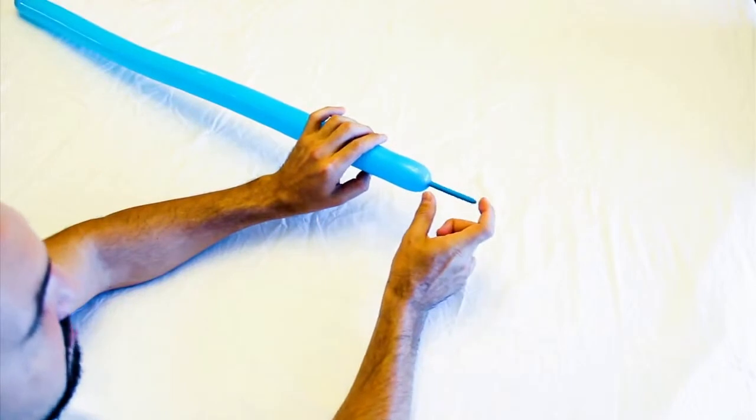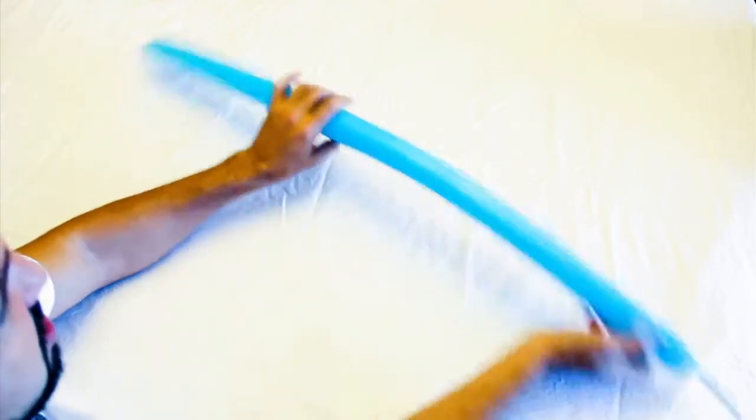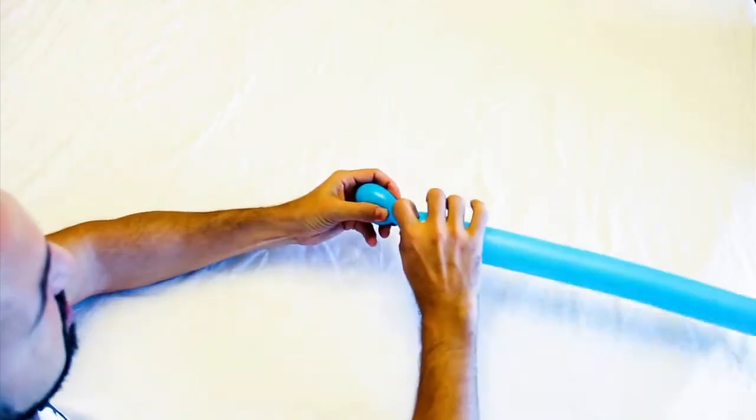Okay, we're going to make a wiener dog. You're going to leave two to two and a half inches uninflated, then you're going to make a two inch nose.